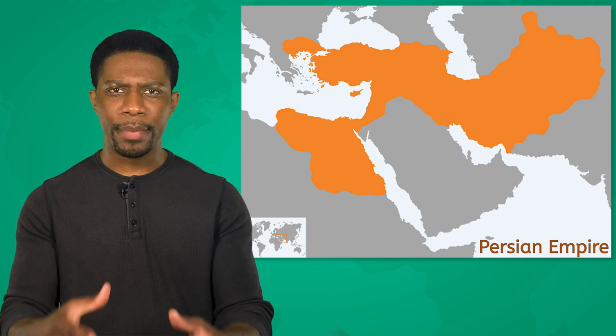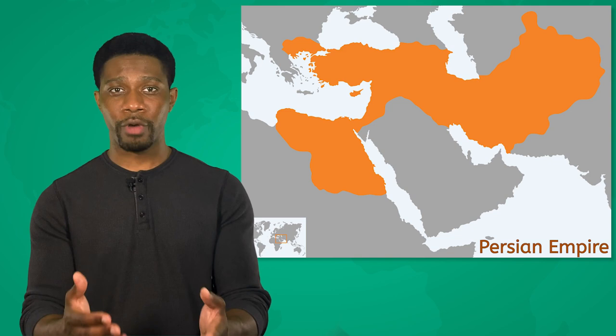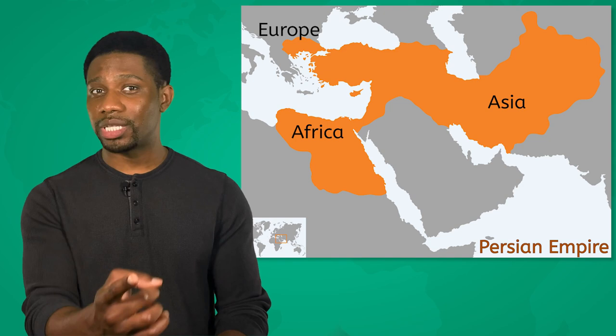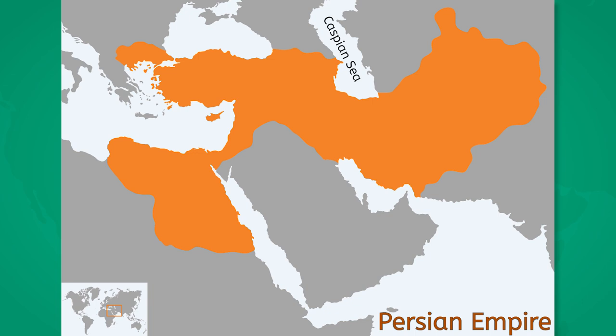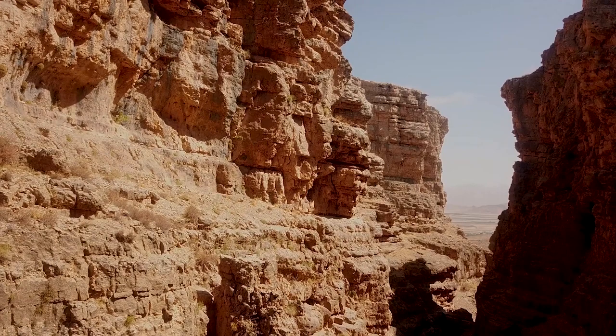Now imagine if you woke up one day and you were ruling the biggest empire the world had ever seen. That's what it was like to be a king in the Persian Empire. This mega empire was smack in the middle of the Levant, but it stretched so far it touched three continents — Asia, Africa, and Europe were all part of this giant kingdom. And how would you like to live in a kingdom with beaches on three sides? The Caspian Sea to the north, the Persian Gulf to the south, and the Mediterranean Sea to the west.